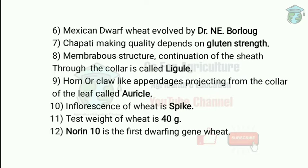Regarding parts of the wheat plant: a membrane structure that is a continuation of the sheath through the collar is called the ligule. A horn or claw-like appendage projecting from the collar of the leaf is called the auricle. These two parts — ligule and auricle — can differentiate wheat from rice.